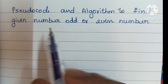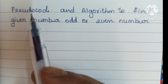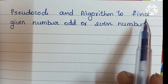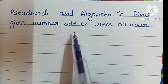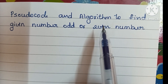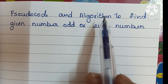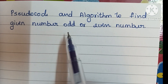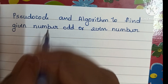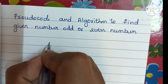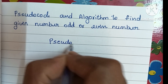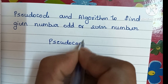Hi guys, in this video we're going to learn how to write pseudocode and an algorithm to find whether a given number is odd or even. Here we have to check whether the given number is odd or even. First, we're going to write the pseudocode.